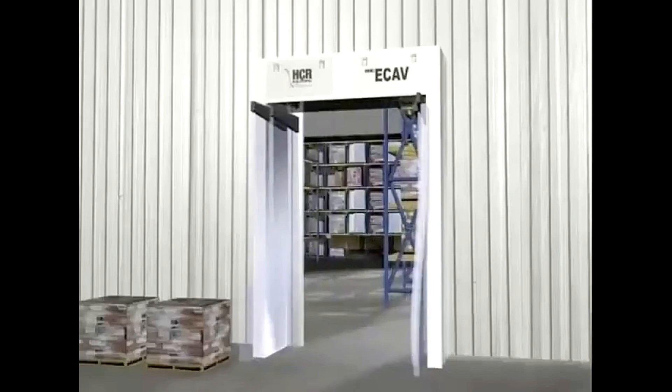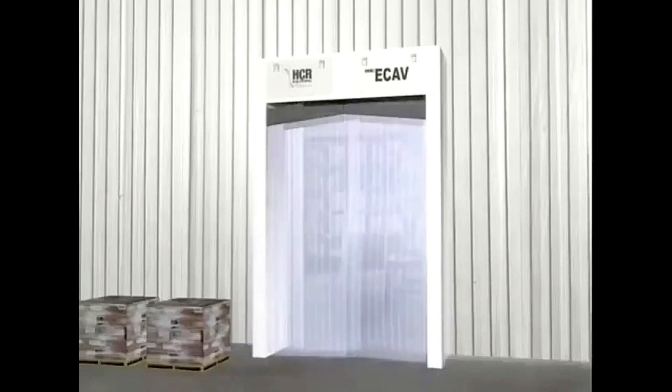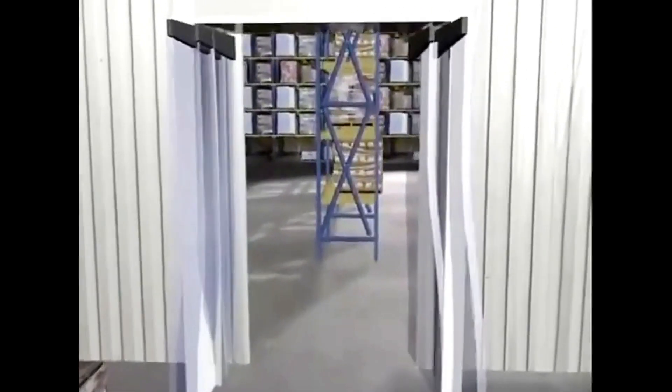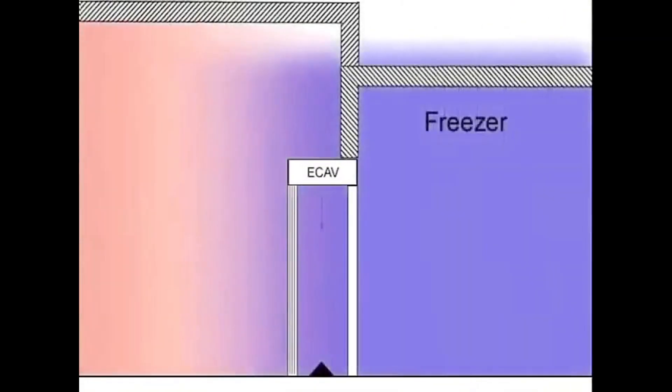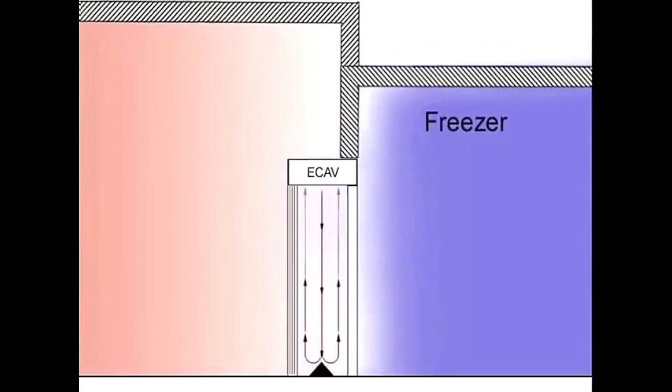Strip curtains can be added to all HCR models for even greater efficiency in the conditioning process. The model ECAV, which consists of two strip doors, also creates a vestibule for conditioning air, and is designed for high-traffic freezer and high-humidity situations.